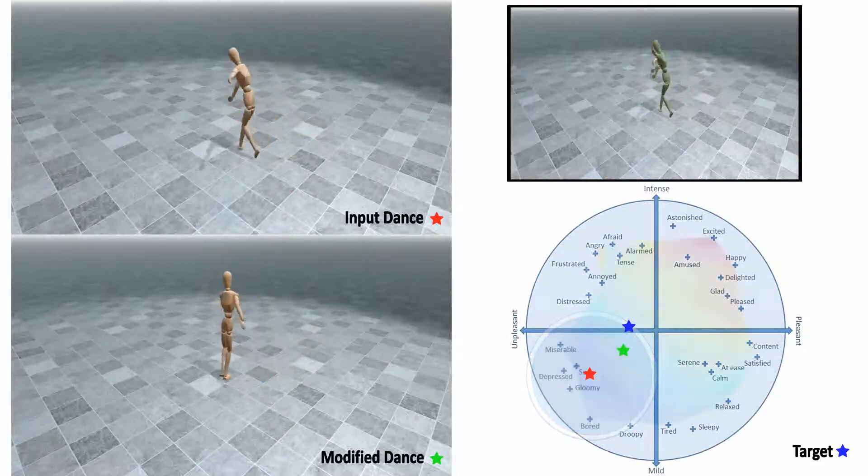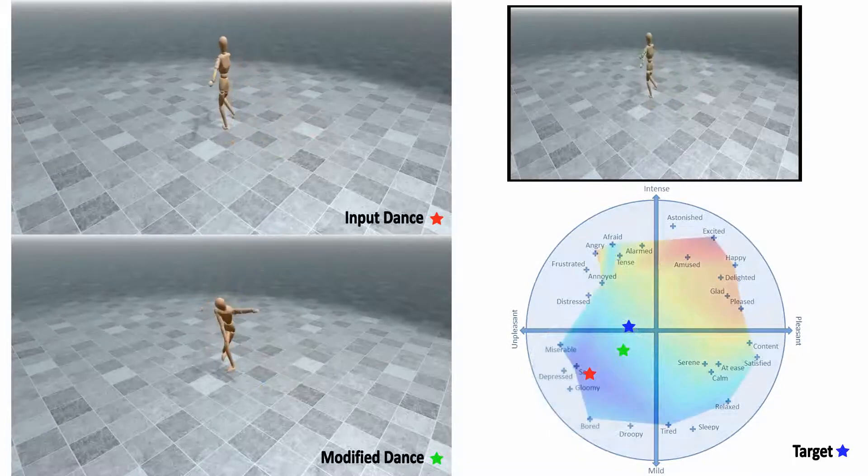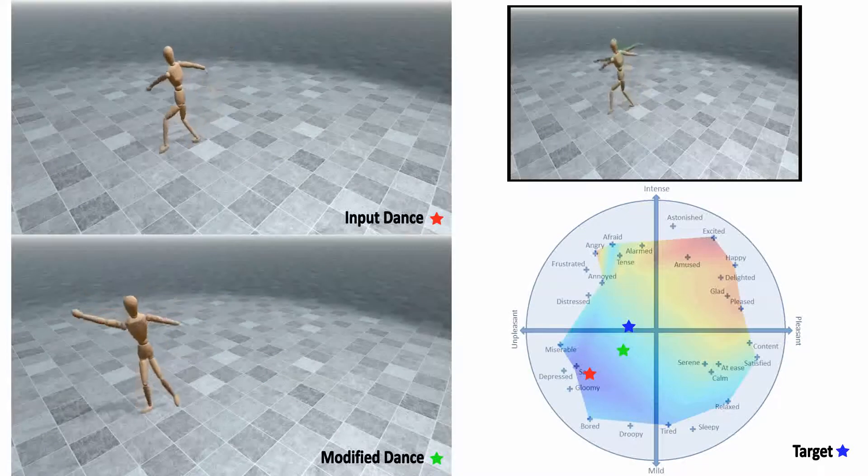The RBF interpolation illustrates how a feature changes when moving from the position of the input motion on the RCM diagram to the position of the target emotion.